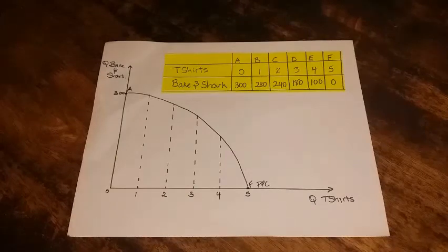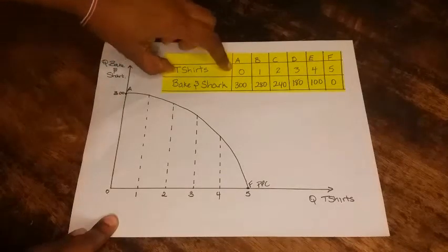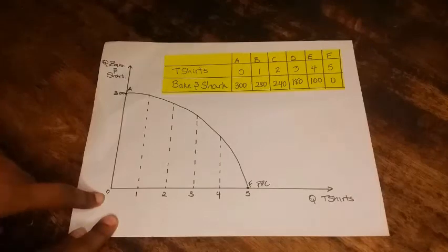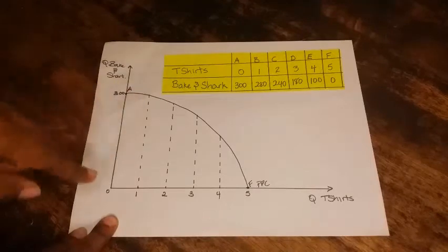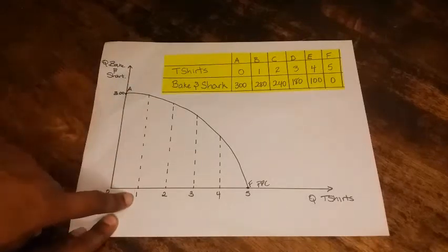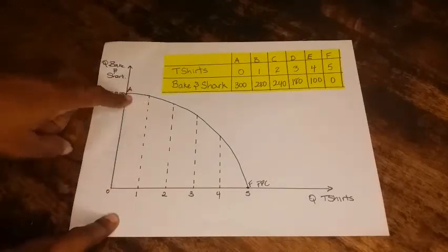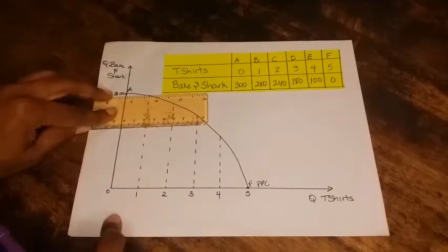For example, at point A we can see that we produce zero t-shirts and 300 bacon shark. Notice zero t-shirts and 300 for the bacon shark. At point B we're going to be producing one unit of t-shirts and 280 units of bacon shark, so we're going to plug that in — this will now be point B.